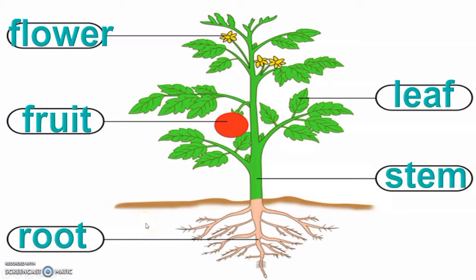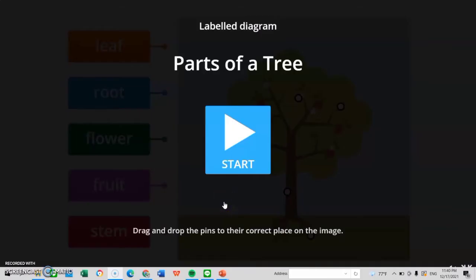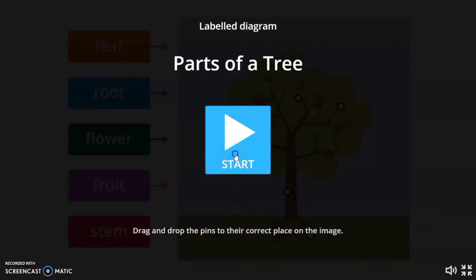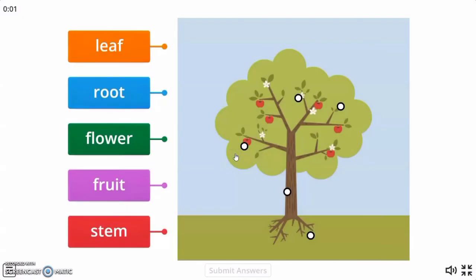Before we proceed to your worksheet, let's have a game. Are you ready? Let's play a game. Parts of a tree. Let's start. Okay. Leaf. Where is the leaf of the tree? Very good. This is leaf of a tree. Next is root. Where is the root of the tree? Very good. This one.